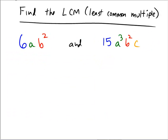Let's find the least common multiple of the following monomial expressions: 6ab² and 15a³b²c.